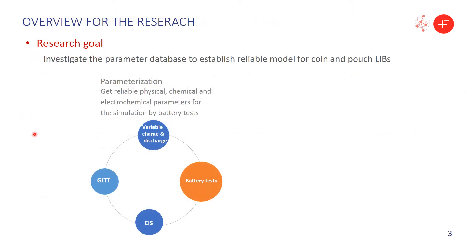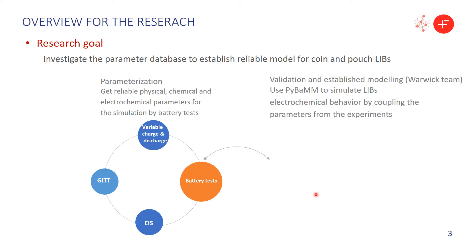This slide gives you an overview of what we were doing in this research. The first part is about the battery tests. We have the validation variable charge and variable discharge tests, and we also have the GITT and EIS tests. Apart from this, we also have the electrode calibration. By having the battery tests and the calibration, we obtained 35 physical, chemical, and electrochemical parameters.